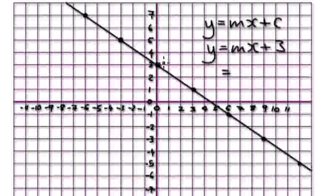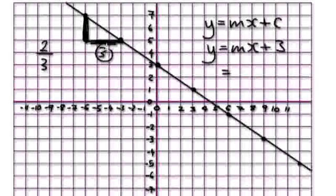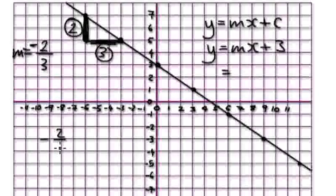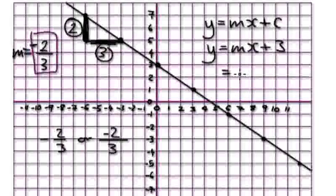Now the gradient — using this triangle — is always the up and down first divided by the across. So that would be 2 divided by 3, because the width is 3 and the vertical height is 2. So m equals 2 over 3, but because it's going downhill, this is a negative gradient. So let's stick a minus in there. You can write it as minus 2 over 3. So it would be y equals minus 2 over 3 times x plus 3.